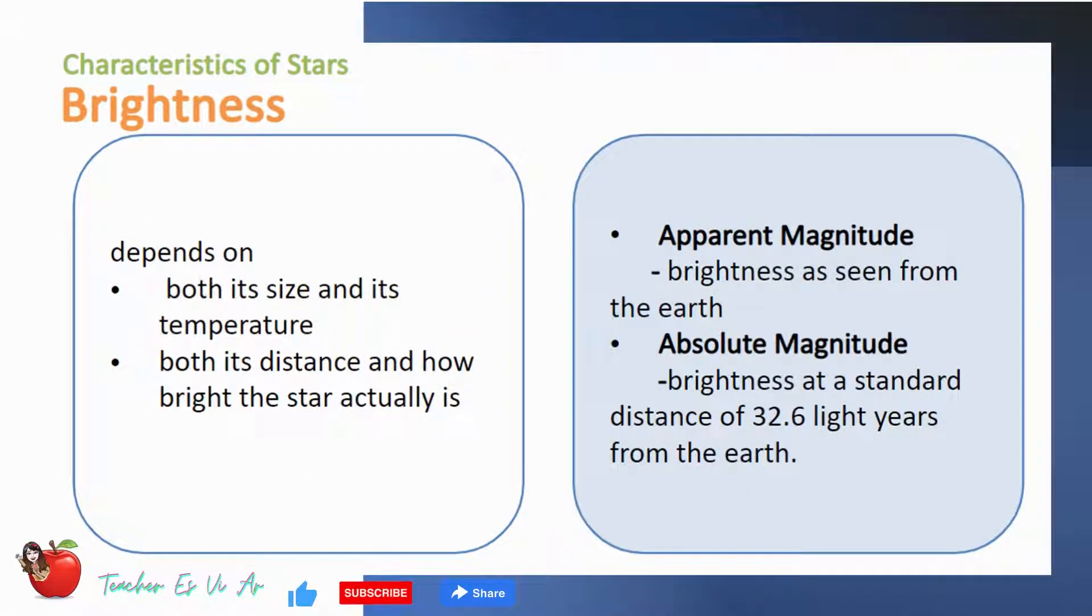The last characteristic that we will discuss is brightness. Brightness depends on both of its size and its temperature. It also depends on both its distance and how bright the star actually is. Apparent magnitude is the brightness as seen from the Earth. Absolute magnitude is the brightness at a standard distance.